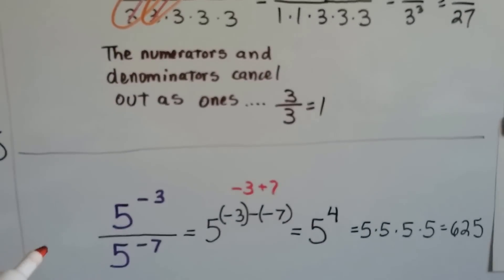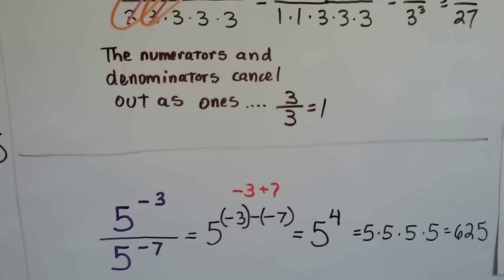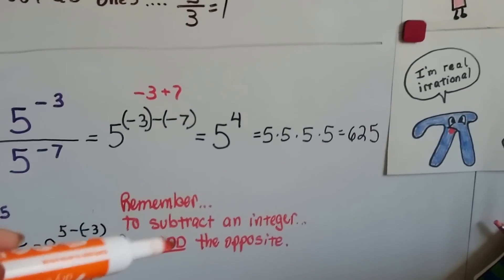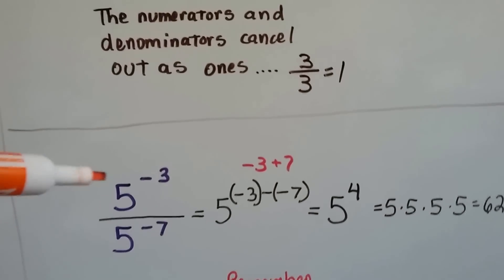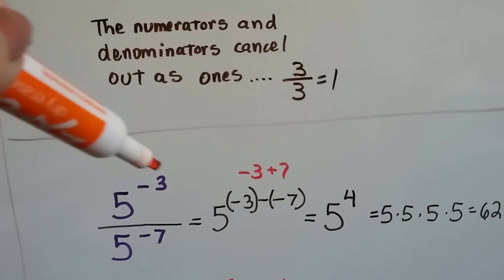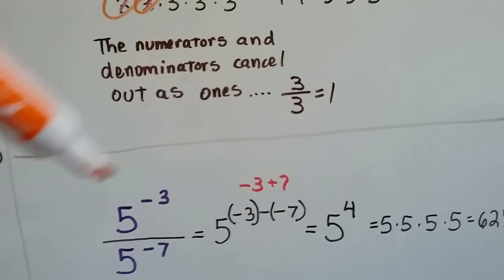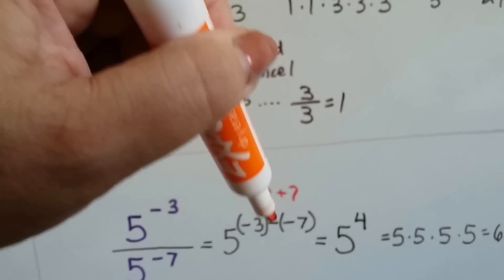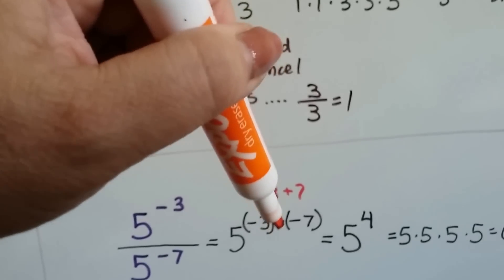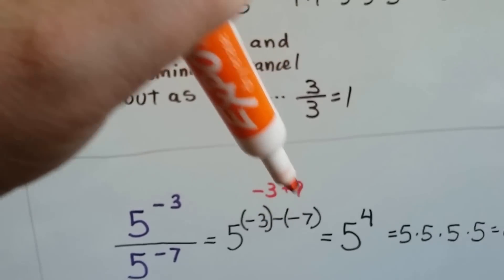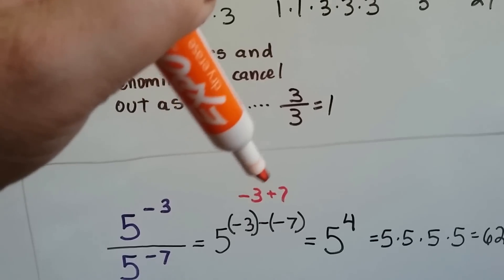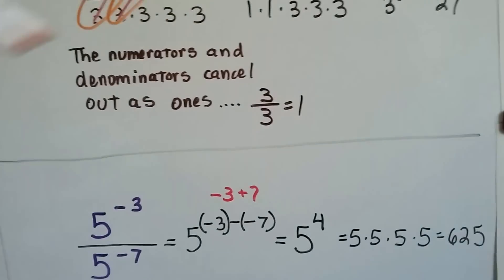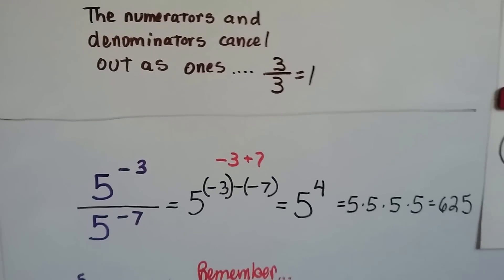Now what happens in a case like this when we've got a couple of negatives? Do you remember the rules? When you subtract an integer, you add the opposite. So we've got 5 to the negative 3rd, take away negative 7. We add the opposite: this subtraction sign becomes a plus sign, and the opposite of negative 7 is positive 7. So we've got negative 3 plus 7, which gives us a positive 4: 5 to the 4th power, or 625.